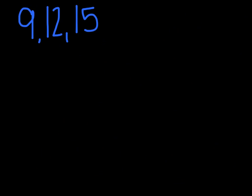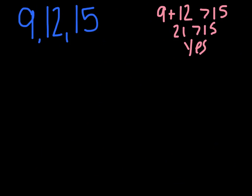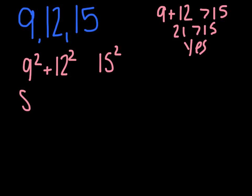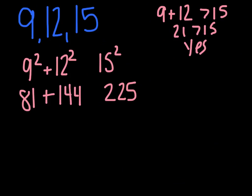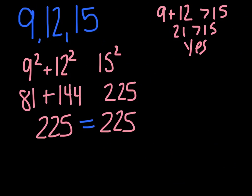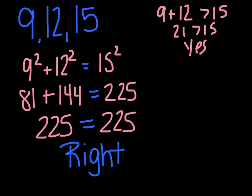In our last example, we have 9, 12, and 15. I always want to test to make sure they form a triangle first by adding my two shorter sides and confirming that it's greater than my third. 21 is greater than 15, so yes, they form a triangle. To determine the type, we square our two shorter sides and add them together and see how it compares to the square of our third side. 9 squared is 81, 12 squared is 144, and 15 squared is 225. 81 plus 144 is exactly 225. So since the squares of the two shorter sides equal the square of the third side, the triangle that results is a right triangle.